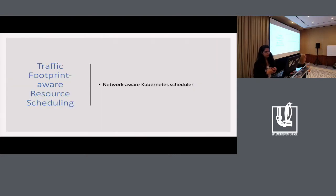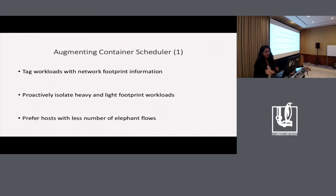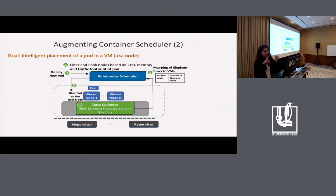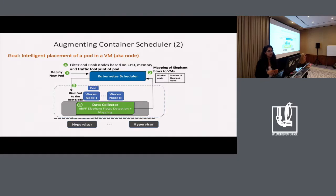With this foundation of eBPF tracing with conntrack, let's see how we can make the Kubernetes container scheduler network-aware. We explicitly tag workloads with network footprint information so that when redeployed in new containers, their footprint can be proactively used by the scheduler. A data collector runs on every hypervisor as a distributed agent — it's a Python front end that loads the eBPF program. Once the eBPF program creates add or delete elephant flow events, the data collector aggregates this information and sends an update to the Kubernetes scheduler.